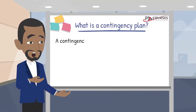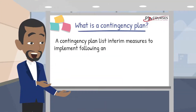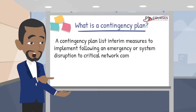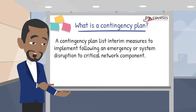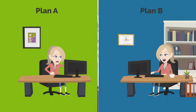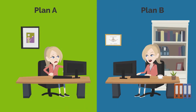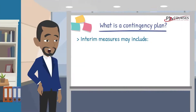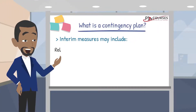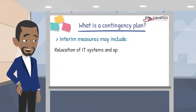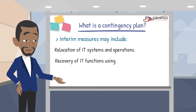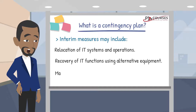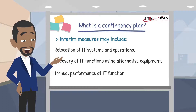A contingency plan lists interim measures to implement following an emergency or system disruption to critical network components. In other words, think of a contingency plan as your network's plan B. Those interim measures can include the following: the relocation of IT systems and operations to an alternate site, the recovery of IT functions using alternate equipment, or the performance of IT functions using manual methods.